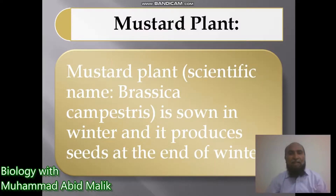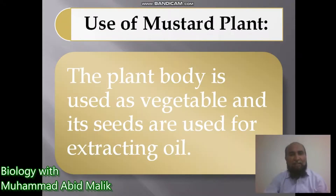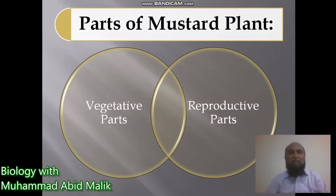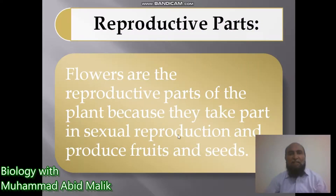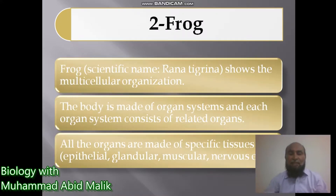The mustard plant has the scientific name Brassica campestris. It is sown in winter and produces seeds at the end of winter. The mustard plant has two uses: it is used as a vegetable, and oil is extracted from its seeds. Its parts include vegetative parts — roots, stem, and leaves — which do not take part in sexual reproduction, and reproductive parts such as flowers, which produce fruits and seeds.